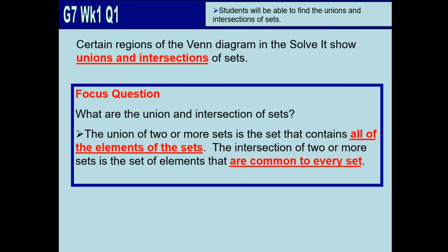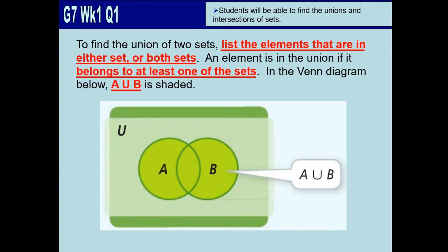Now for more examples. If you want to find the union of two sets, you list the elements that are either in the sets or in both sets. An element is in the union if it belongs to at least one of the sets. In the Venn diagram, A union B is shaded — all of the shaded region for A and all of the shaded region for B represents the union of the sets.